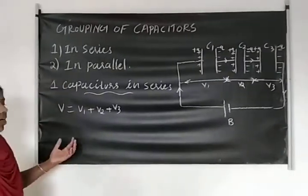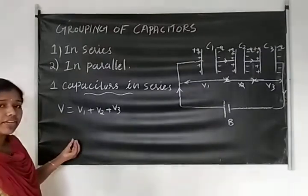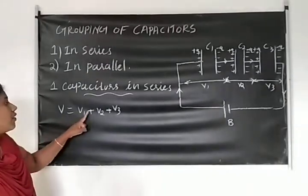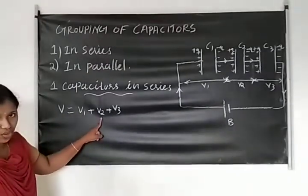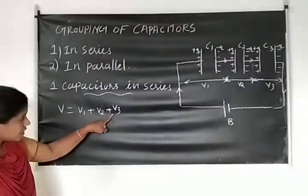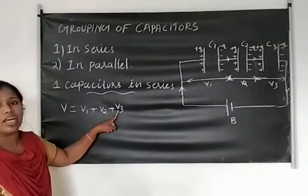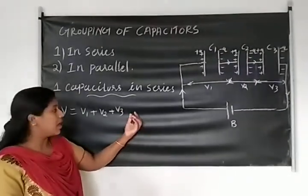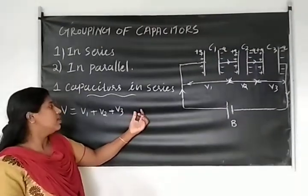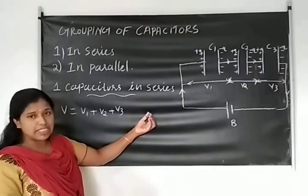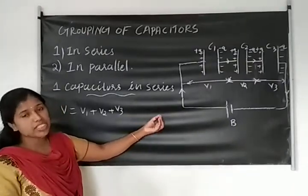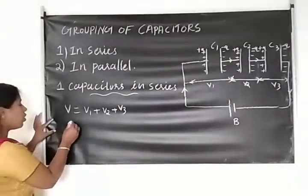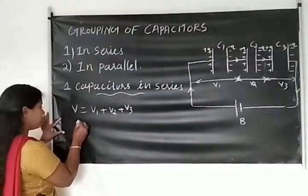That is V equal to V1 plus V2 plus V3 for three capacitors connected in series. For two capacitors, V is equal to V1 plus V2. For N capacitors, V equals V1 plus V2 plus V3 plus V4, and so on up to VN.